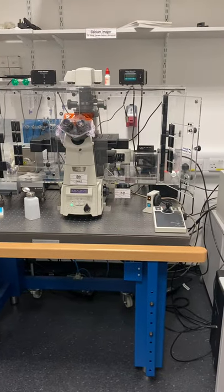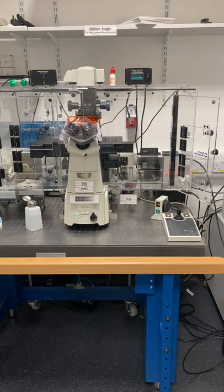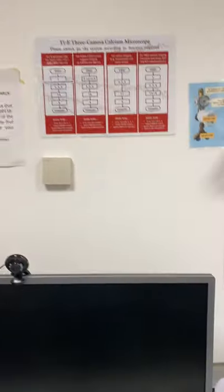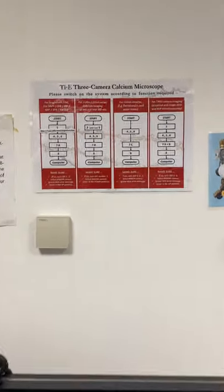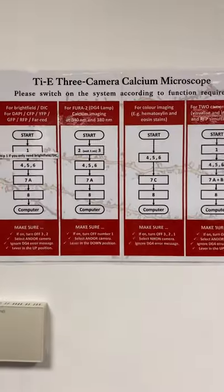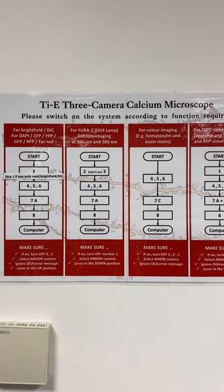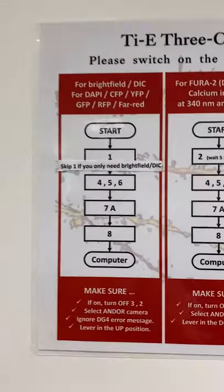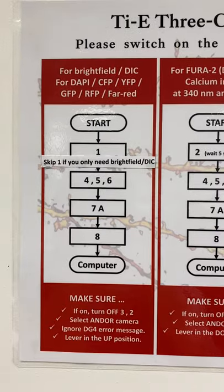This video is for switching on the TIE three-camera calcium microscope. There's a poster just above the computer screen. You need to switch the system on according to how you want to use it — for today I'm going to switch it on according to column number one.